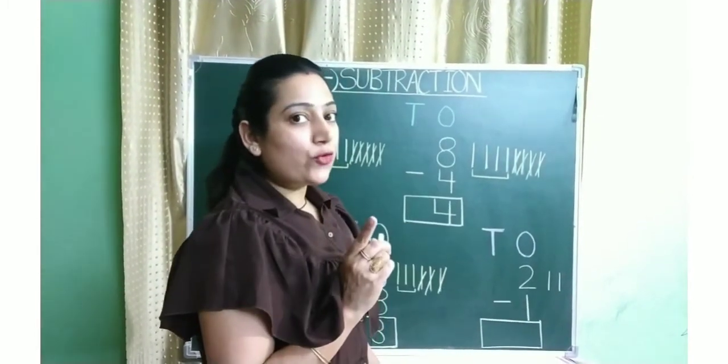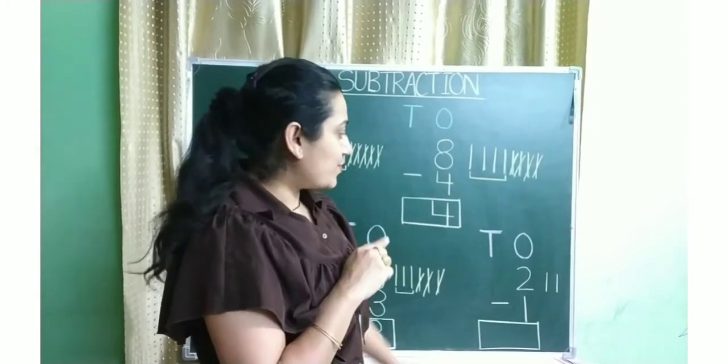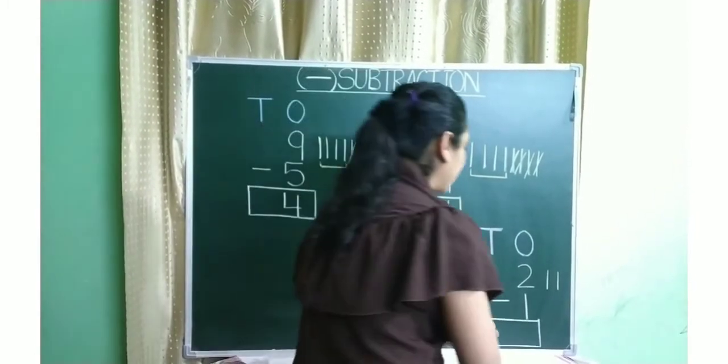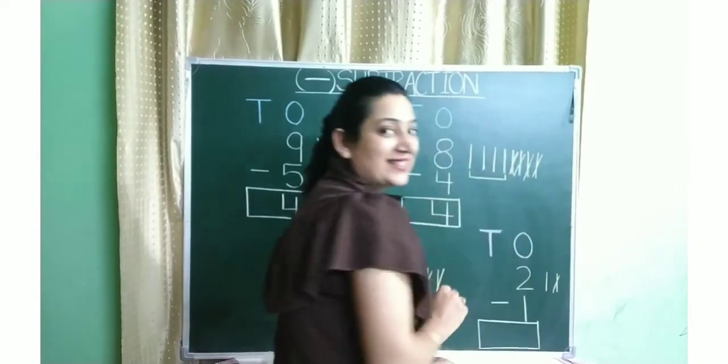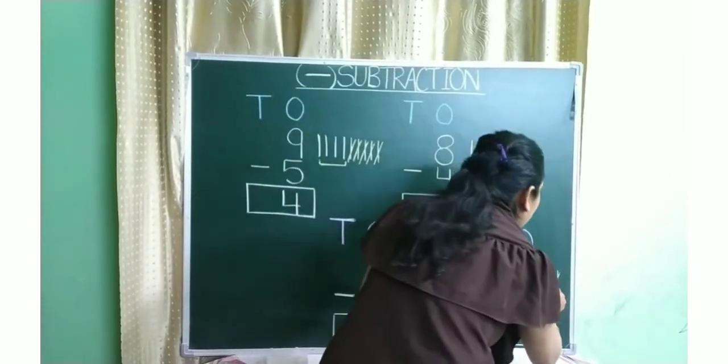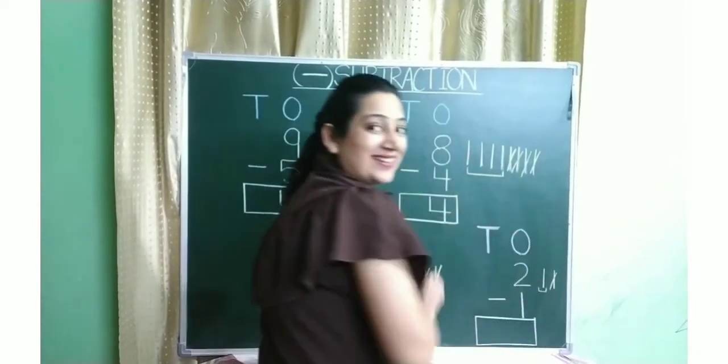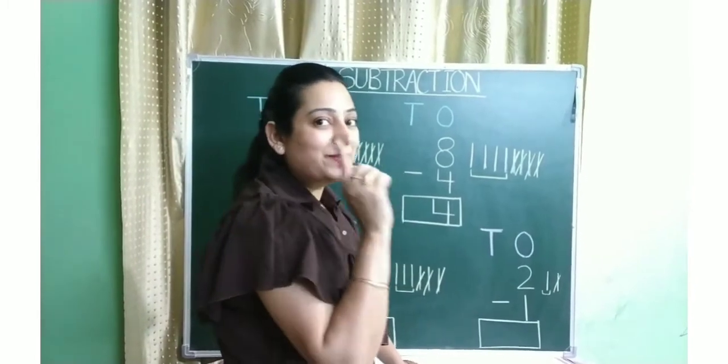Number 1. So we have to subtract number 1 from number 2. So we will cut one standing line. How many left? Only 1. So our answer will be number 1.